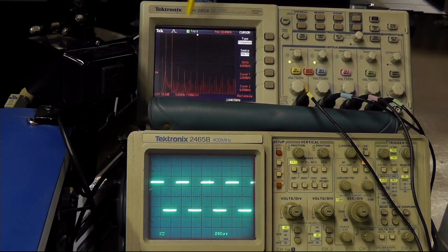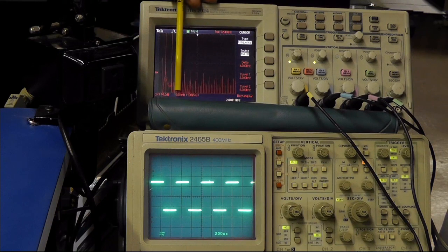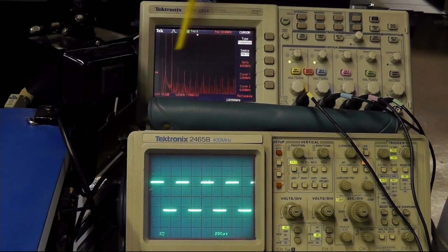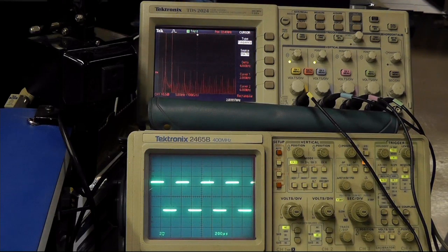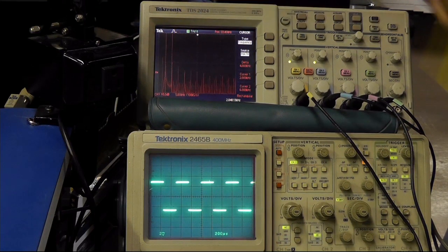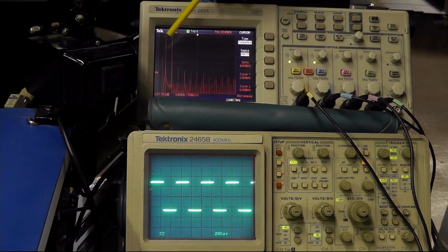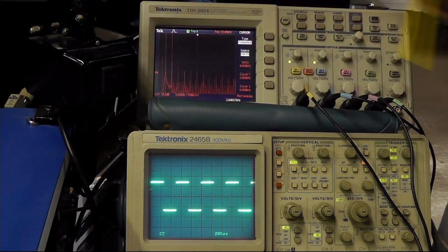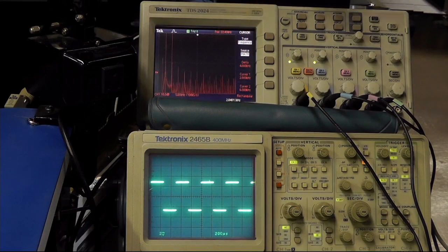And then if we look, and you see I have my cursor on it, we see another spike, and it's at 6 kHz. And so it's a 4 kHz difference. So that's what we call the third harmonic. It's not the second. That would be a difference of 2 kHz. But the third harmonic is a difference of 4 kHz.